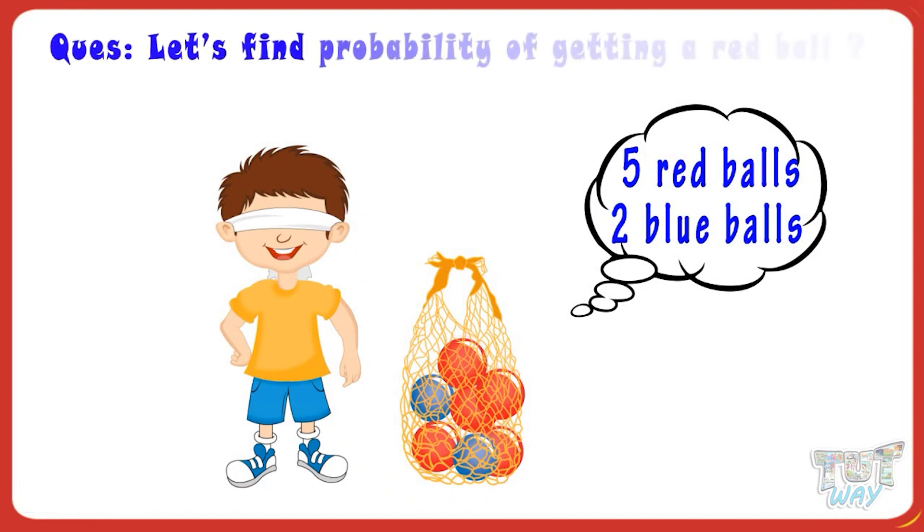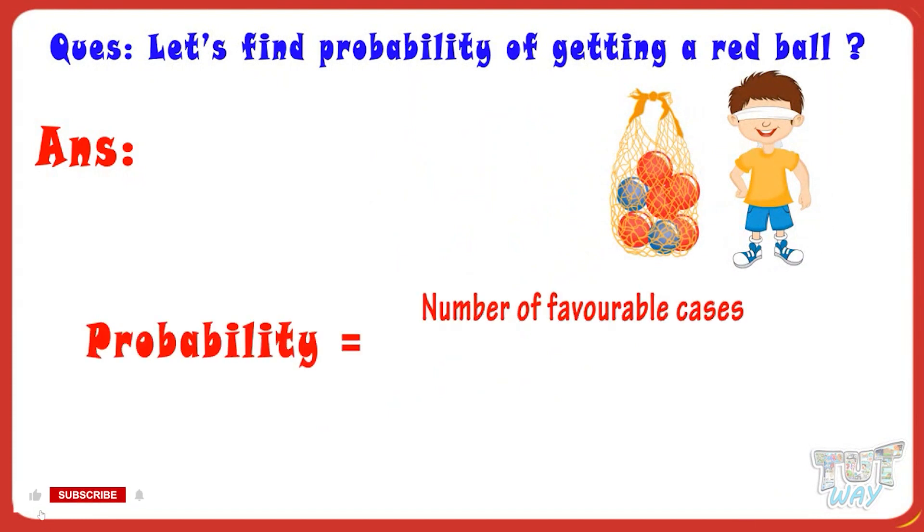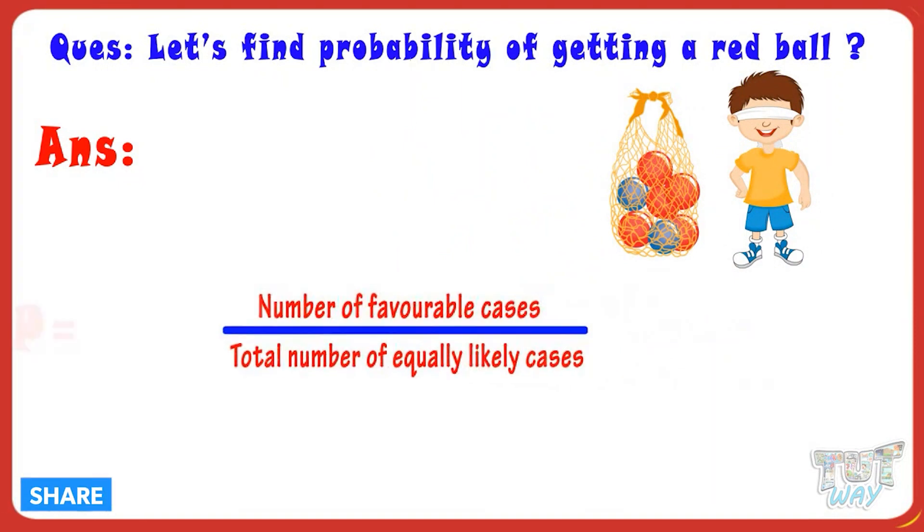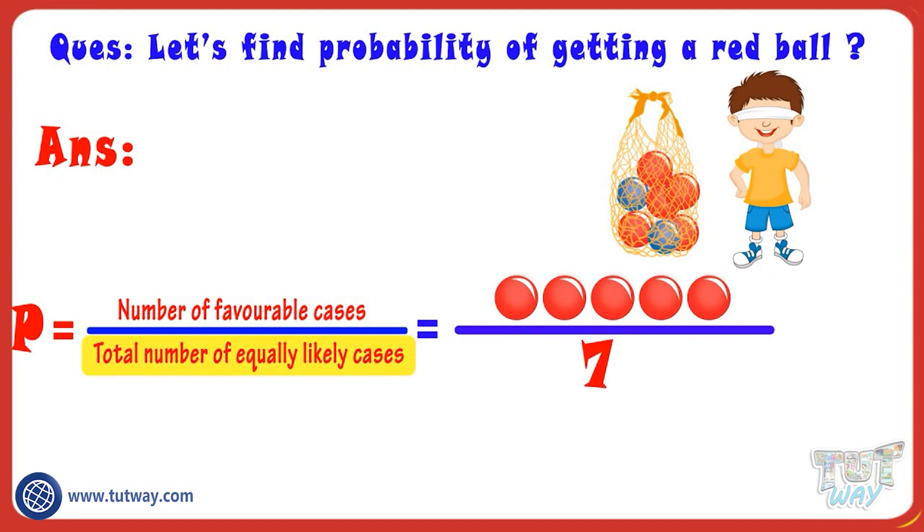Let's find probability of getting a red ball. We know the formula is probability of getting red balls is number of favorable cases divided by total number of equally likely cases. And the number of favorable cases are five, as five red balls are there. And total number of equally likely cases are seven, as seven balls are there.